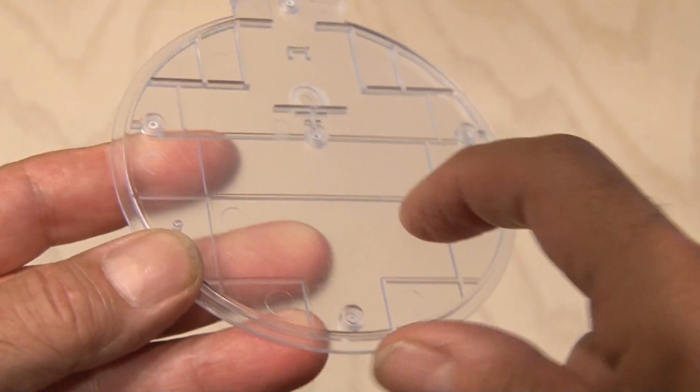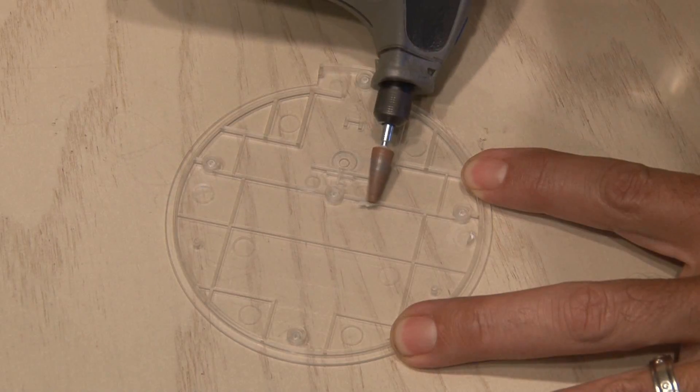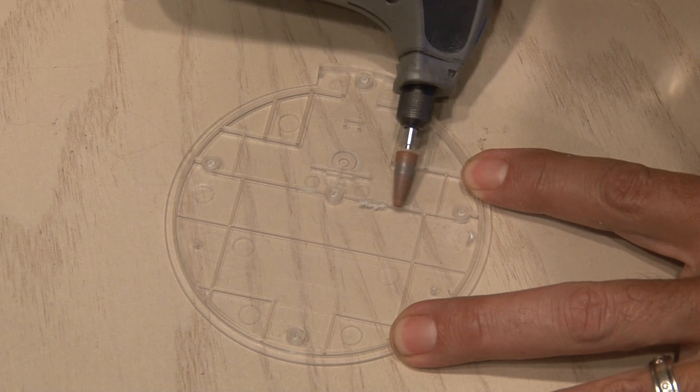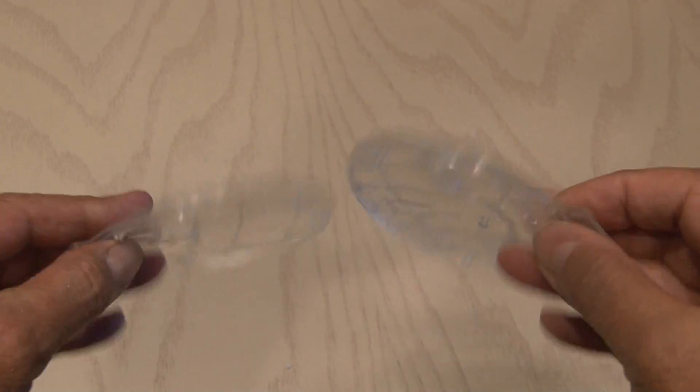This coaster has a bunch of little raised surfaces that have to go, so I'll be using my Dremel and a sanding tool. I'm going to remove all of these raised areas, so when I'm done, it looks like this.